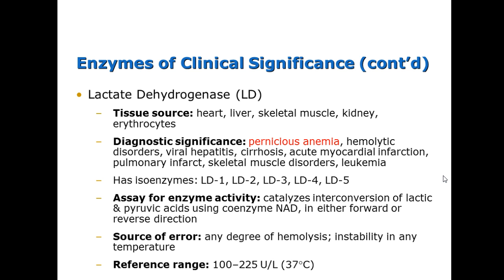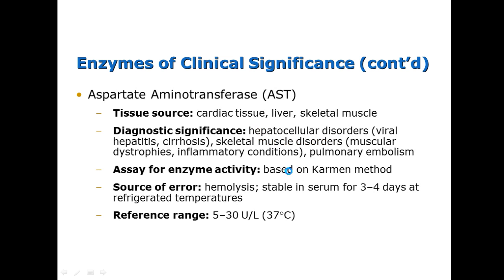Isoenzymes can be done to see what portion is elevated. Again, hemolysis significantly affects this test. The reference range is 100 to 225. If LDH is increased, you can see it affects a number of things, so it is not very specific diagnostically. The next enzyme is aspartate aminotransferase (AST), which is found in cardiac tissue, liver, and skeletal muscle. We find it elevated in hepatocellular disorders such as hepatitis and cirrhosis, as well as skeletal muscle disorders.